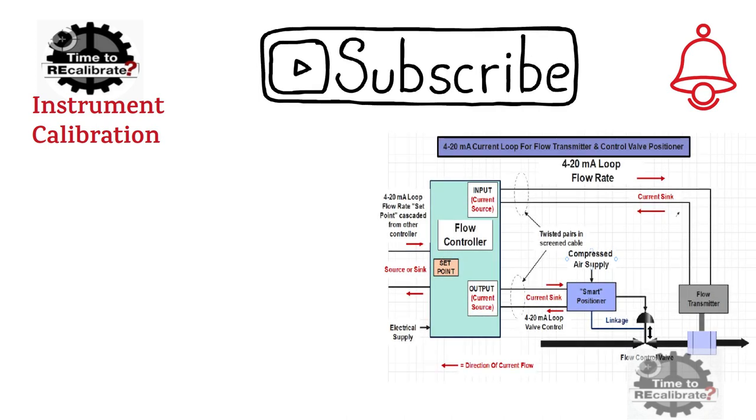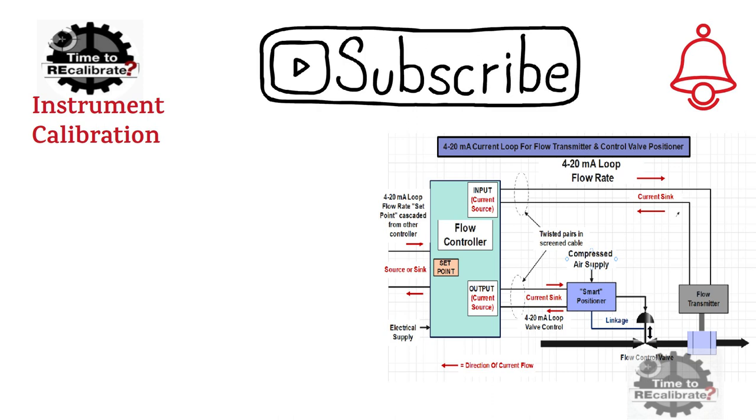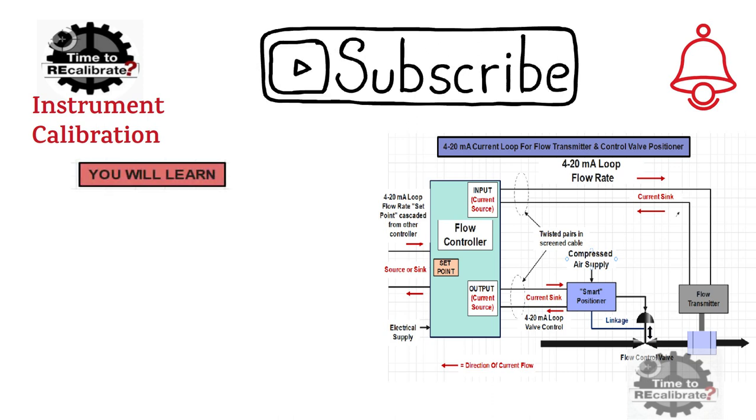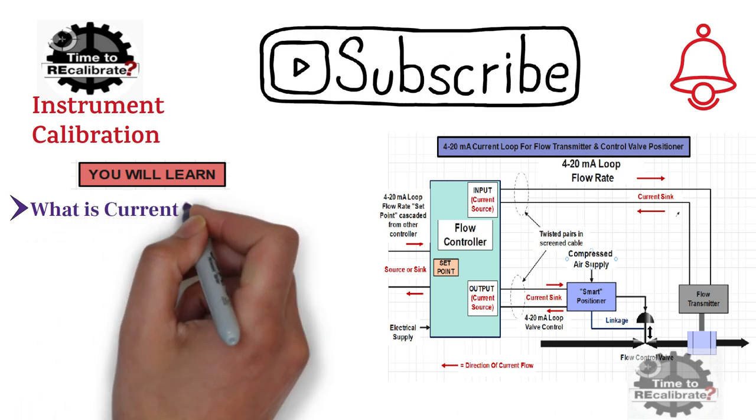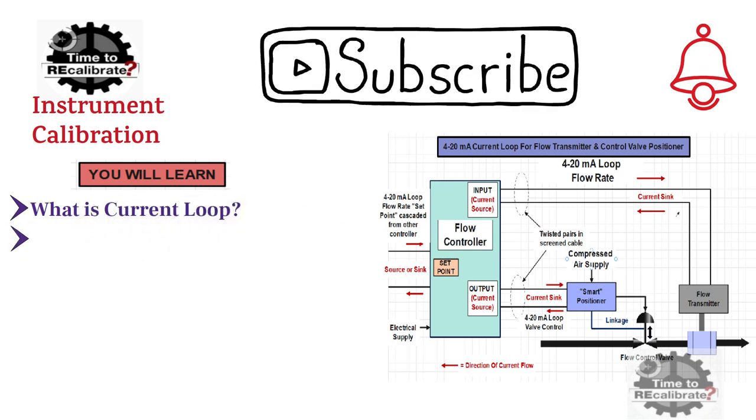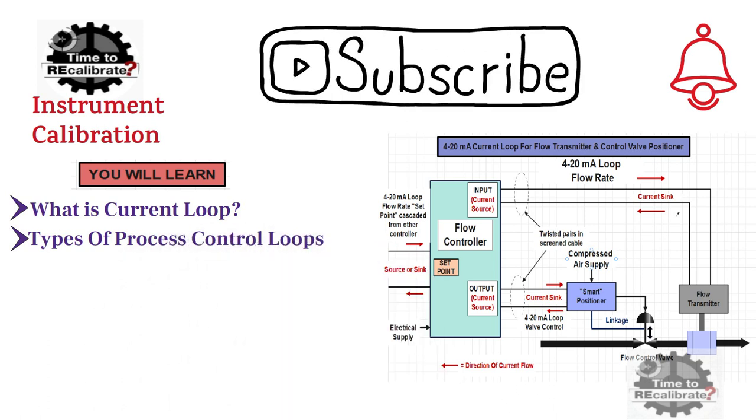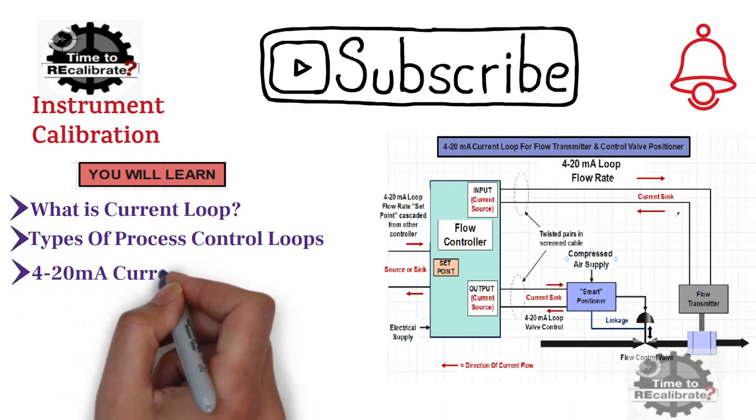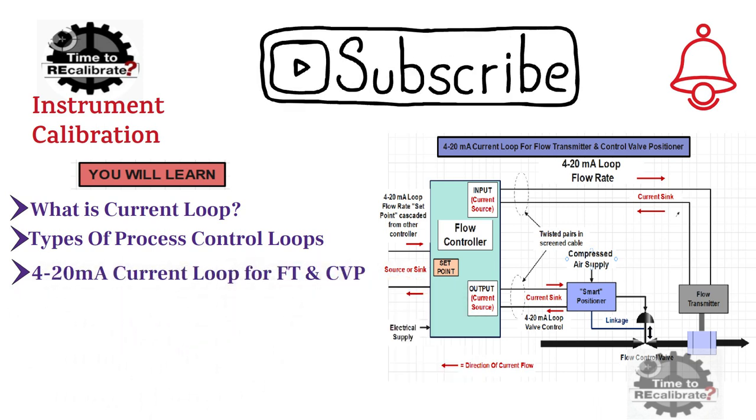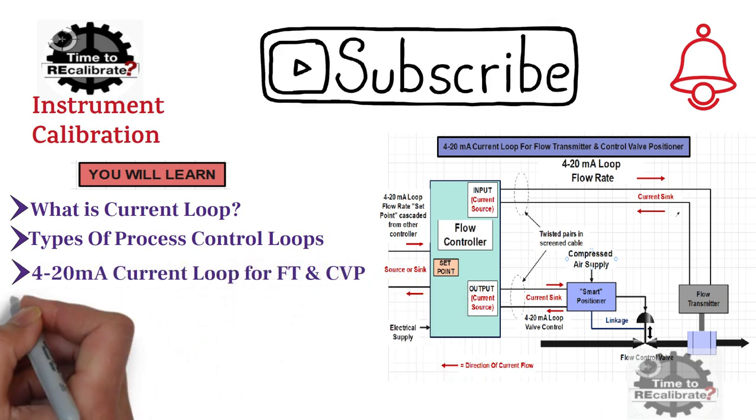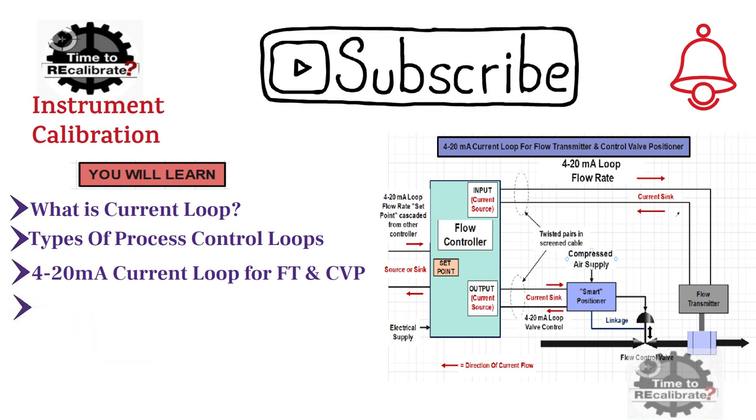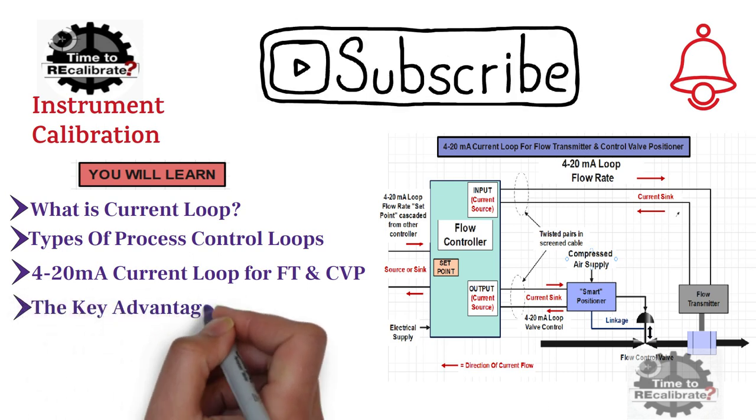This video is on 4-20mA process control loops. In this video, you will learn what is current loop and what are the types of process control loops. I will also give one example of 4-20mA control loop for flow transmitter and control valve positioner. At the end, I will give a few key advantages of current loop.